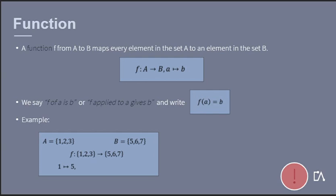Moreover, we assume that f maps 1 to 5, 2 to 6, and 3 to 7. Hence, every element in A is mapped to an element in B, as the definition says. Alternatively, we could also say that f(1) = 5.